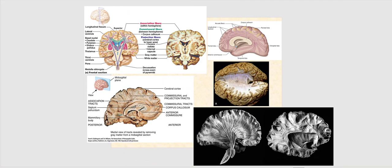Looking at these images, we are focusing on the white matter of the cerebrum — the myelinated axons bundled together forming tracts, found directly deep to the cerebral cortex. The first type are the association fibers, which are connections within the same hemisphere. The arcuate fibers are shorter association fibers meant to connect one gyrus to the neighboring gyrus.